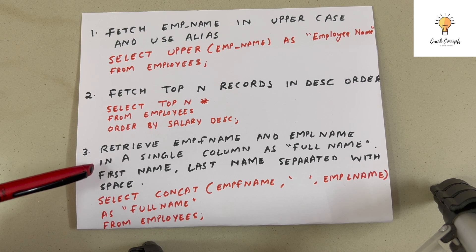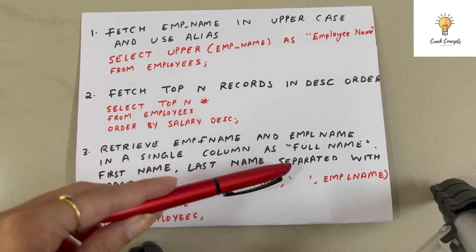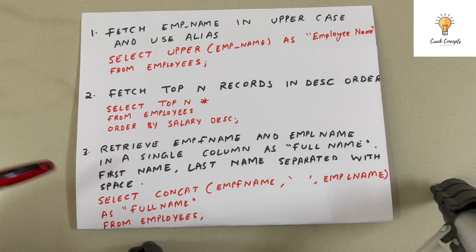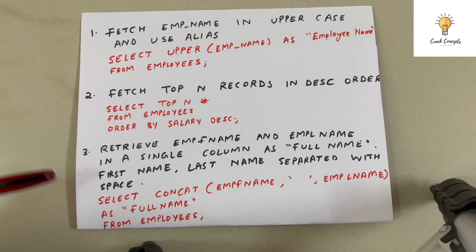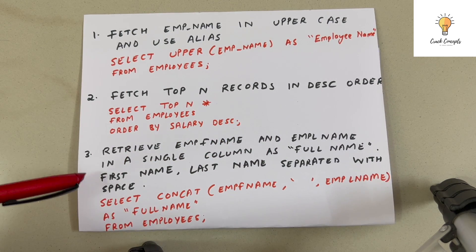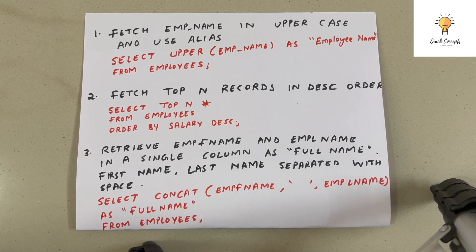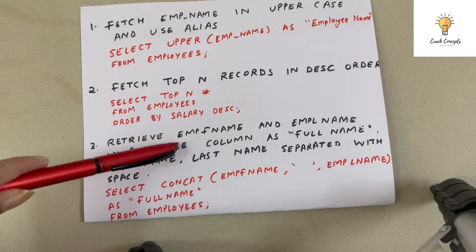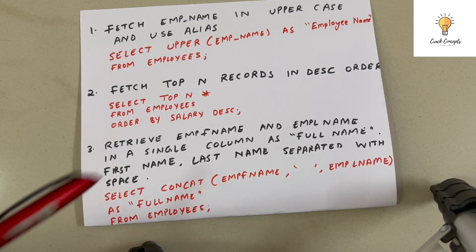The third query: retrieve employee first name and last name in a single column with alias 'full name', separated by a space. There are two columns — first name and last name — and we need to concatenate them into one single column and give it an alias 'full name'.